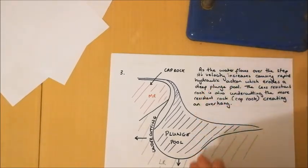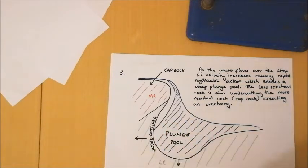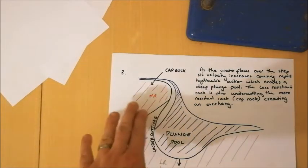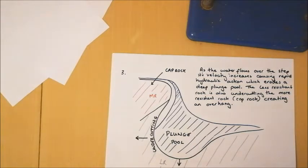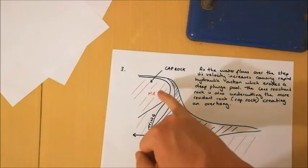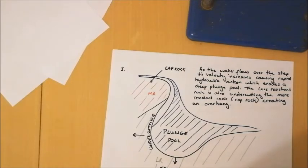Not only is it going to be eroding downwards, but also we're going to get an undercut, and erosion is going to be going backwards, eroding the back of the plunge pool. It's going to undercut the more resistant rock above it. That more resistant rock may be known as something we call a cap rock. It sits on top of the less resistant rock. That undercutting is starting to create an overhang where the more resistant rock is unsupported above the plunge pool.